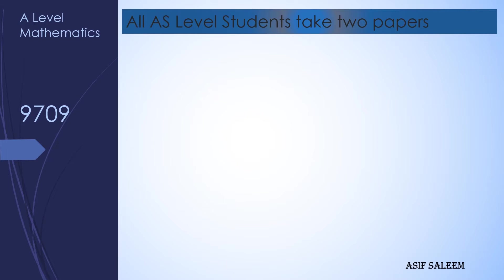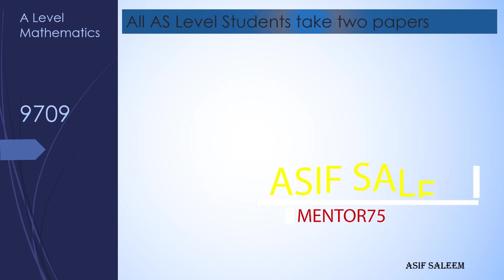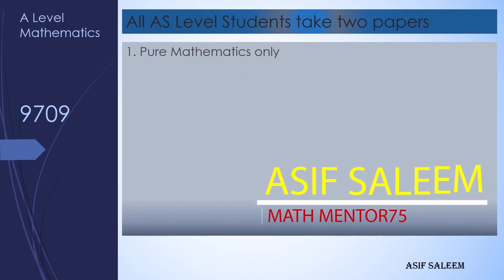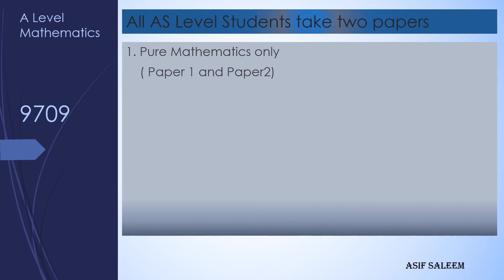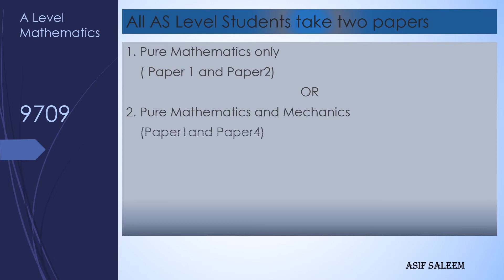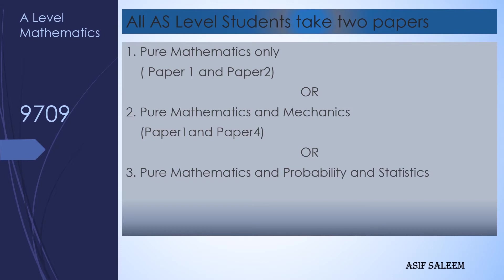For AS Level students, Cambridge has given three different options. Option one: Pure Mathematics — Paper 1 and Paper 2. Option two: Pure with Mechanics — Paper 1 and Paper 4. Option three: Pure Mathematics with Probability and Statistics — Paper 1 and Paper 5.